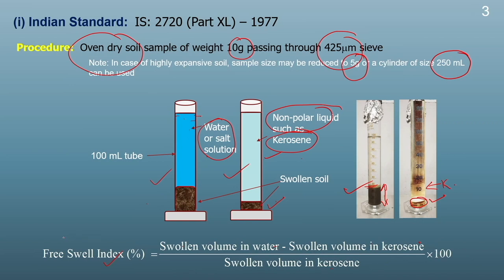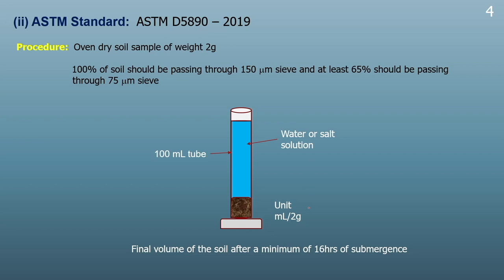This is also called the differential free swelling test or DFS test. In the ASTM standard method, we do not need a non-polar liquid — only the soil and the testing solution are needed. The major difference is that instead of 10 grams, here we will take 2 grams of oven-dry sample. The soil must be 100 percent passing through a 150 micron sieve and at least 65 percent passing through a 75 micron sieve. After preparing the soil, it will be put in an oven for 24 hours to dry.